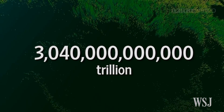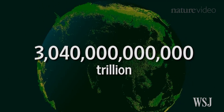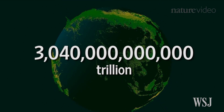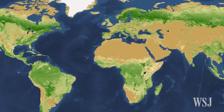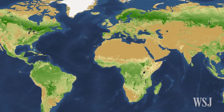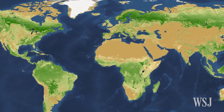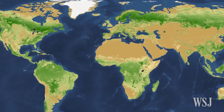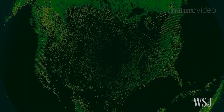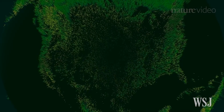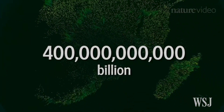There are just over 3 trillion trees in the world, according to a census of global forestation. Researchers at Yale University used satellite imagery as well as ground-based measurements to create the first globally comprehensive map of tree density. The figure dwarfs previous estimates of about 400 billion trees.